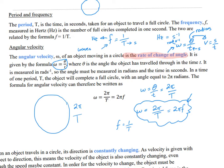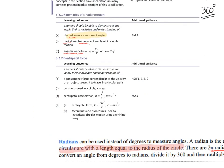You might see angular velocity expressed as degrees per second, revolutions per second, or revolutions per minute. But for our course we must use radians per second at all times. You may need to convert: one revolution is one complete circle, which equals 2π radians.